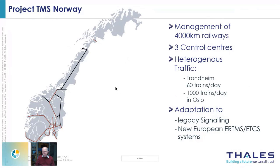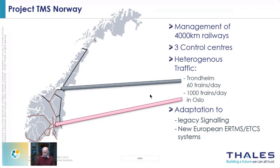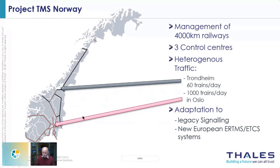A few specific challenges exist for this customer in Norway. The traffic is very heterogeneous: in the north around Trondheim, there are only about 60 trains per day, but in the high-density area around Oslo there are about 1,000 trains per day. There are also technical challenges: the system must adapt to the new European ERTMS/ETCS standardized signaling and control system, while also adapting to existing legacy systems in the meantime, allowing TMS to be in operation before the full rollout is complete.